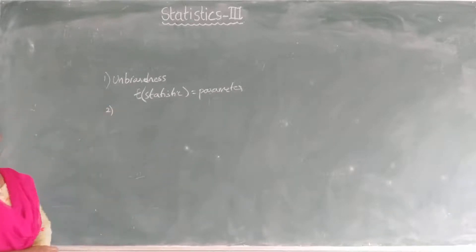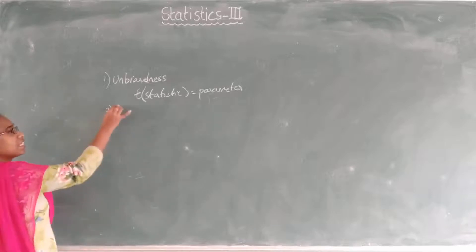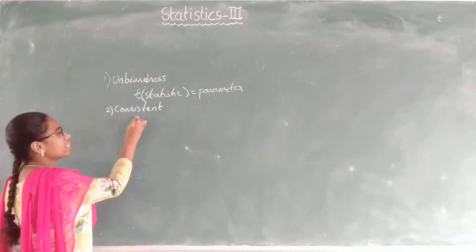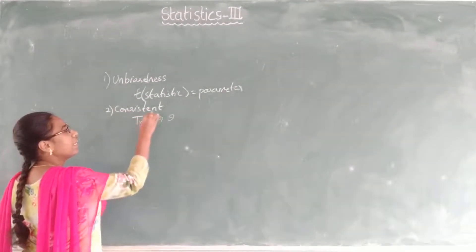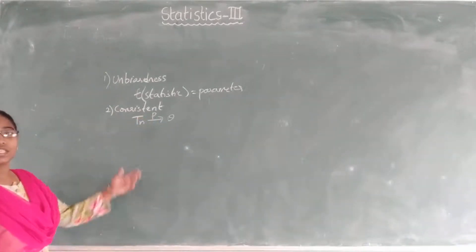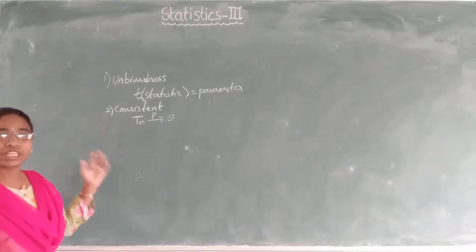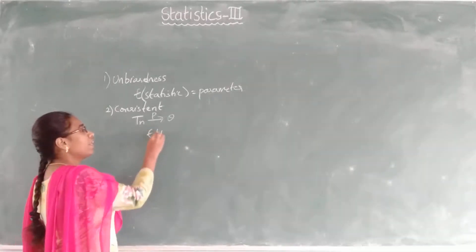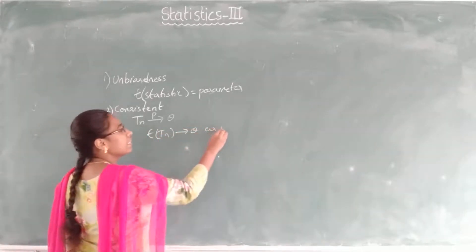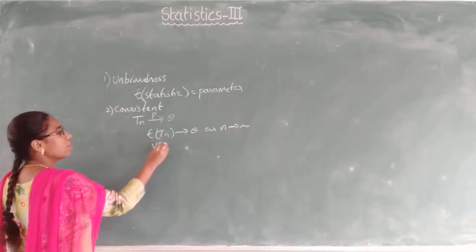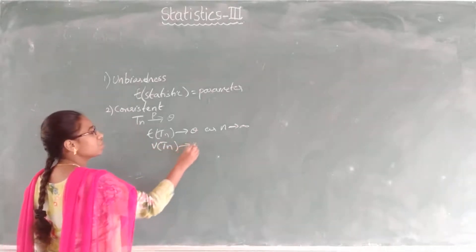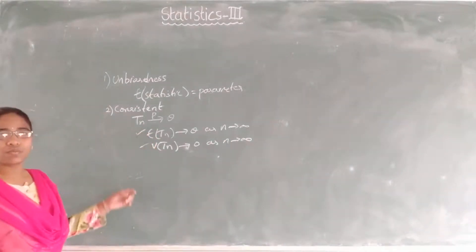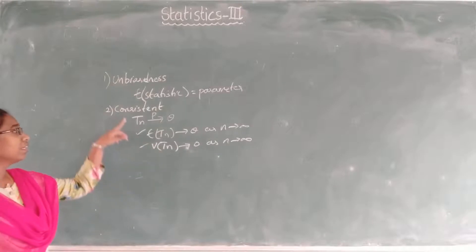The second condition is consistency. What is consistency? Suppose TN is any estimator, then TN tends to theta in probability. To check consistency, we have two conditions: first, expectation of TN tends to theta as n tends to infinity, and second, variance of TN tends to 0 as n tends to infinity. If both conditions are satisfied, then TN is a consistent estimator.